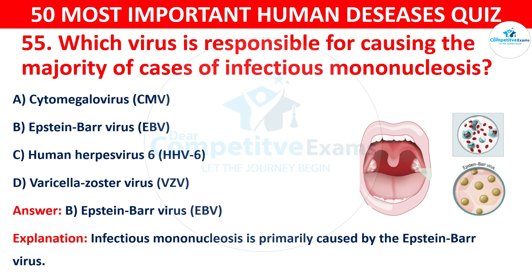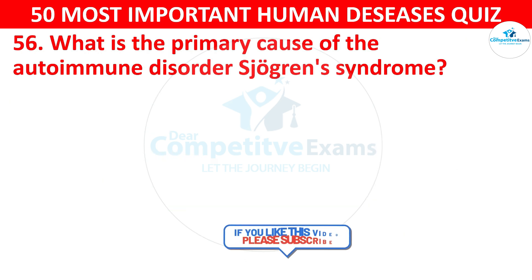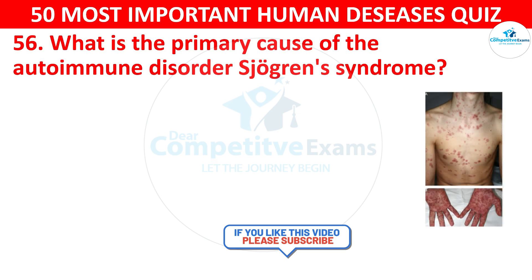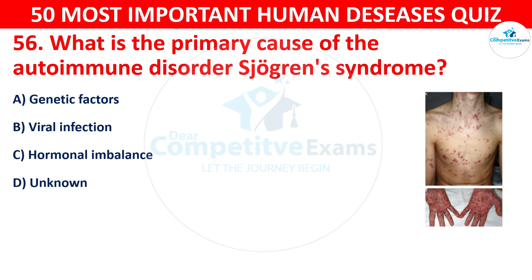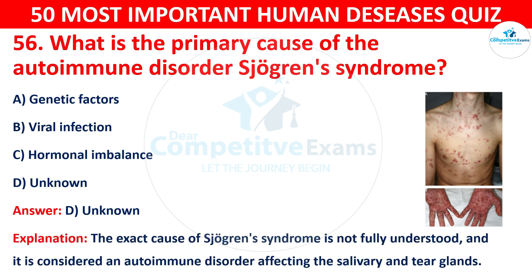Question 56: What is the primary cause of the autoimmune disorder Sjogren's syndrome? The options are: A) Genetic factors, B) Viral infection, C) Hormonal imbalance, or D) Unknown. The correct answer is D — unknown. The exact cause of Sjogren's syndrome is not fully understood, and it is considered an autoimmune disorder affecting the salivary and tear glands.